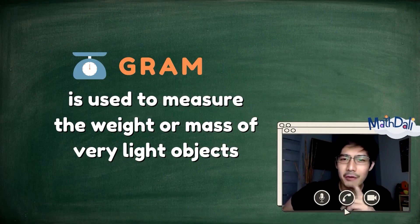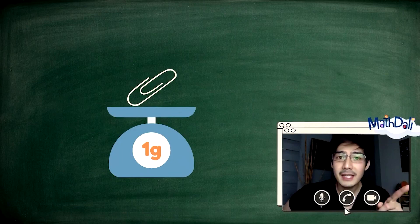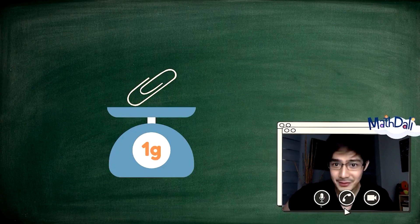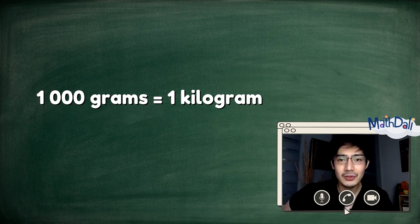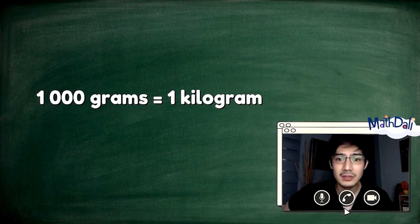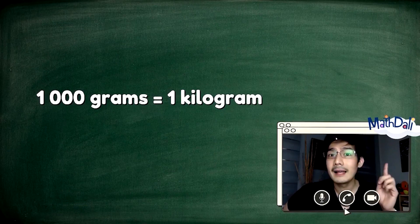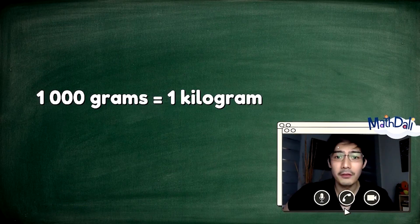Review lang tayo. A gram is used to measure the weight or mass of very light objects. G is short for gram. Kapag nagkaroon na tayo ng 1,000 grams, that's the only time when we have a kilogram — 1 kilogram, dahil 1,000 grams is equal to 1 kilogram. Kung ang gram ay G, ang kilogram ay KG. That's the short term of kilogram.